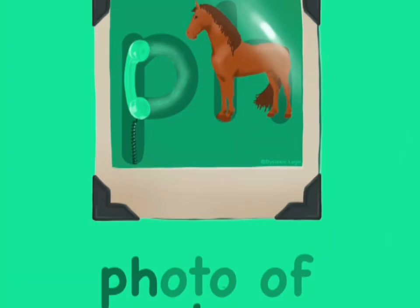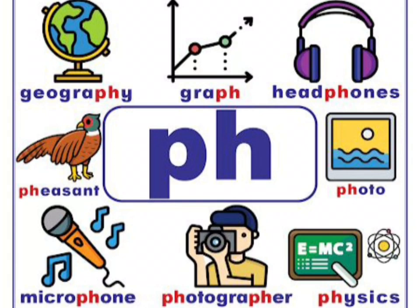Let's see the next sound, which is PH. PH says F. For example, 'photo.' The sound can appear at the beginning, middle, or end of a word. Let's start reading some words.